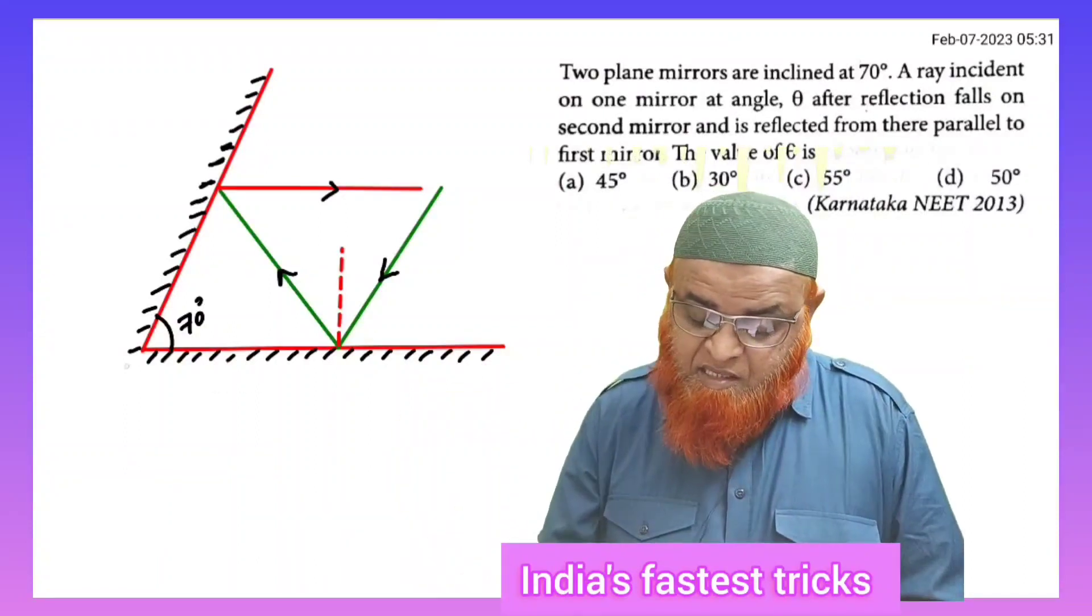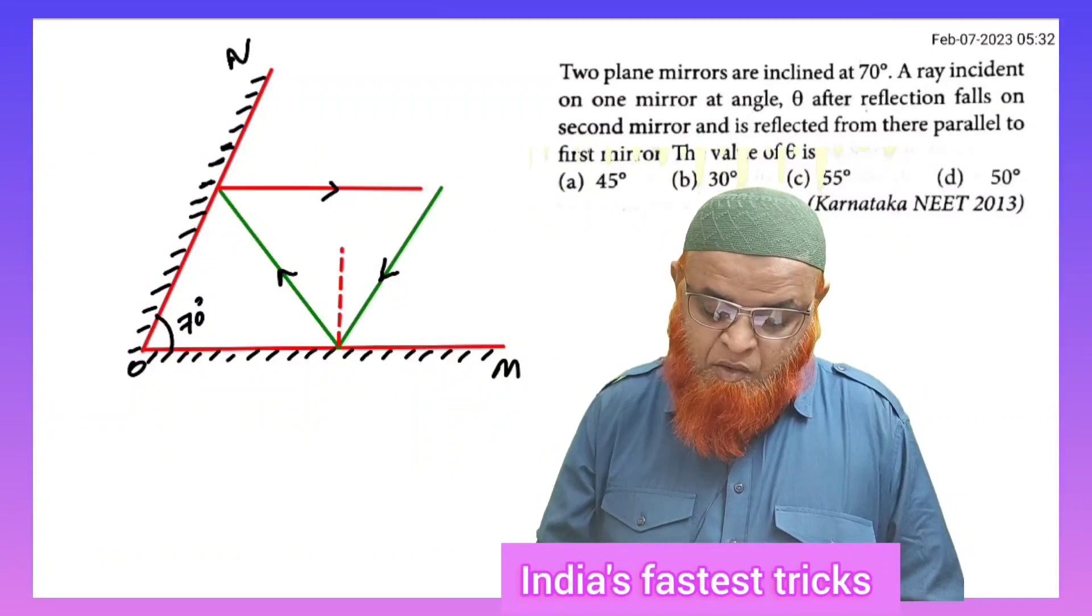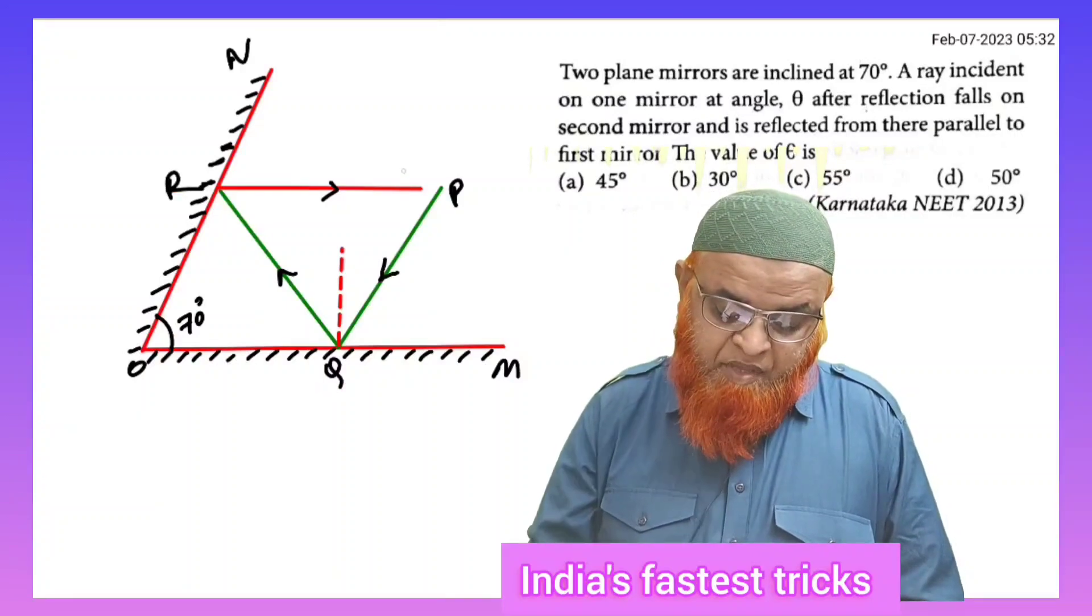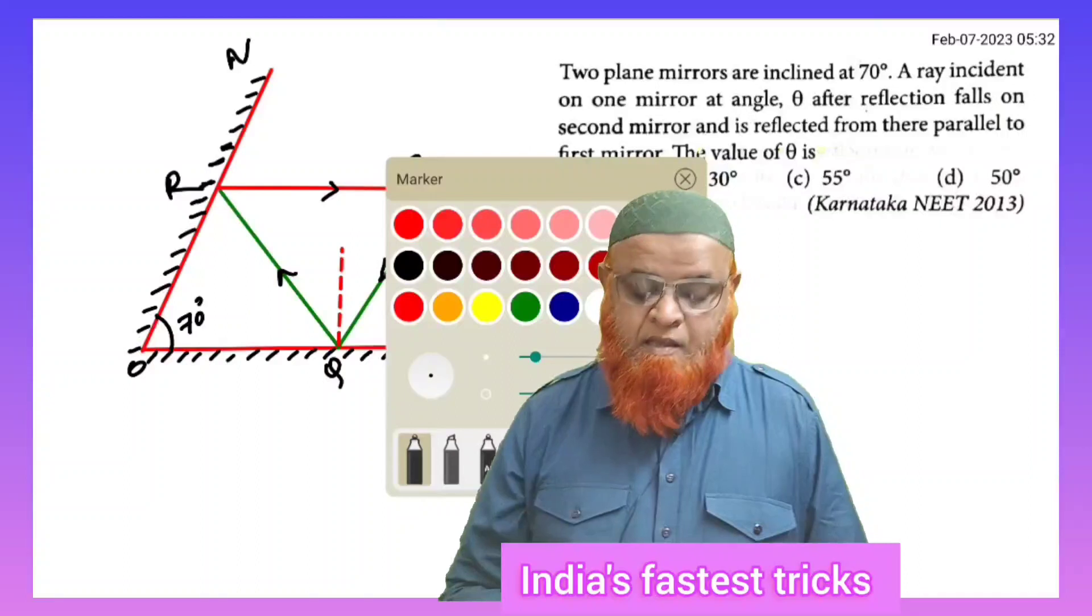Now let us go ahead. These are the two mirrors. So let us consider this is mirror OM and this is OL, and this is light ray P, Q, this is R and this is S.